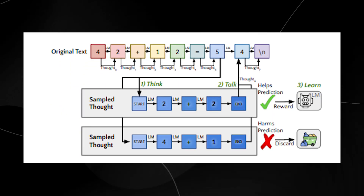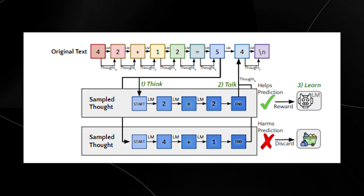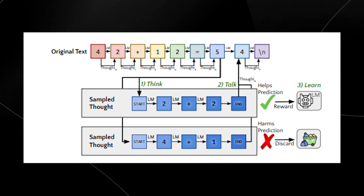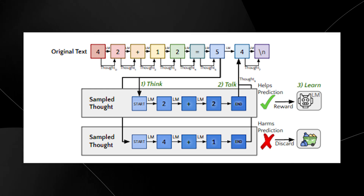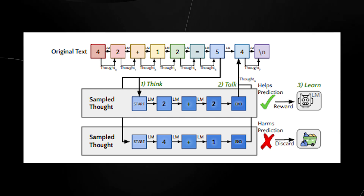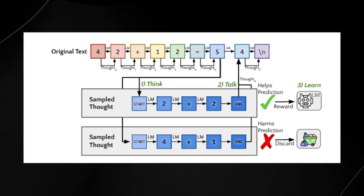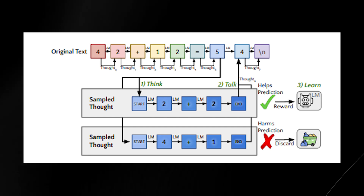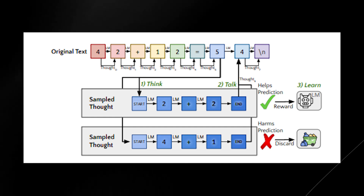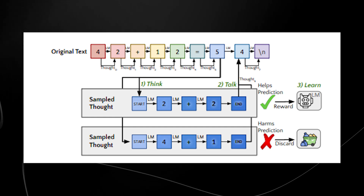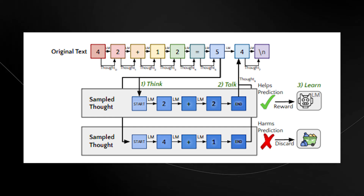Step two: Next token prediction. The model then makes two next-token predictions — one based solely on the original text and one that incorporates the thoughts it generated. These predictions are combined based on a learned weighting.